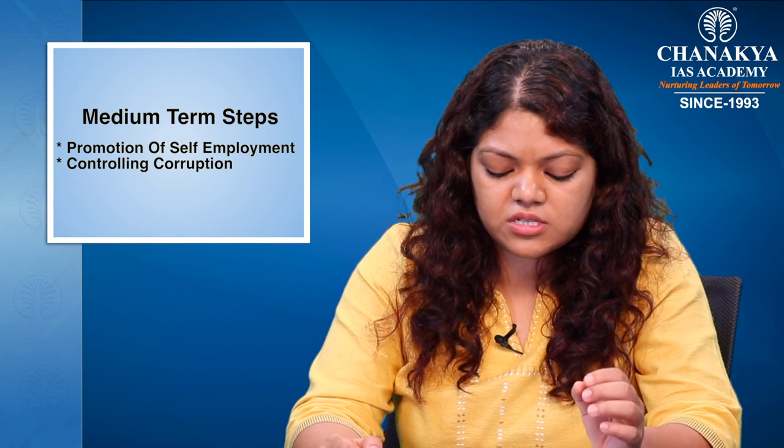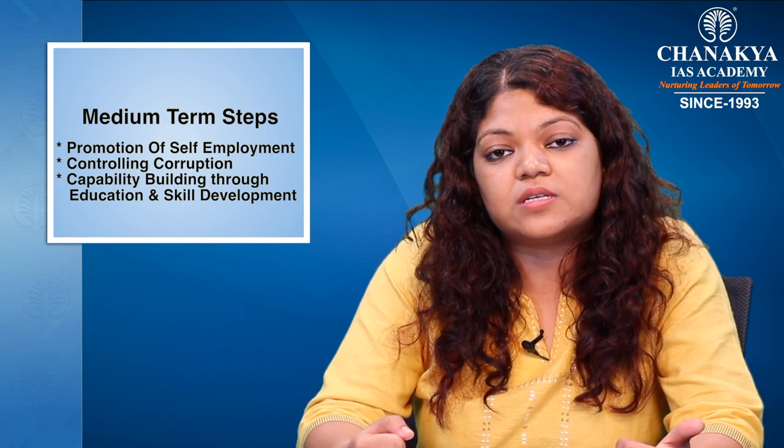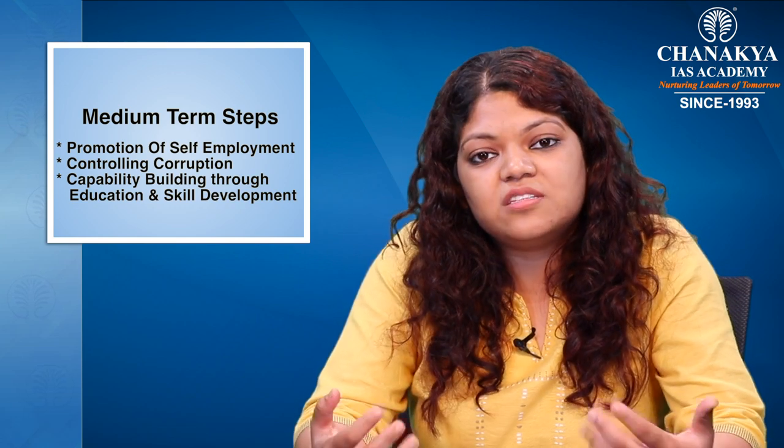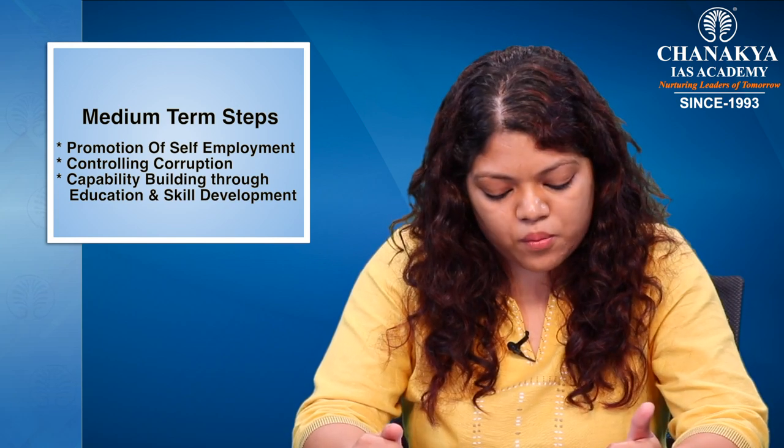Medium-term objectives include the promotion of self-employment and control of corruption. Very important is capability building through education and skills development. If you give a person money, that person can eat once, but if you skill that person and provide education, it ensures that they can earn their own livelihood and widen the choices available to them — making it one of the most important factors in curbing poverty.